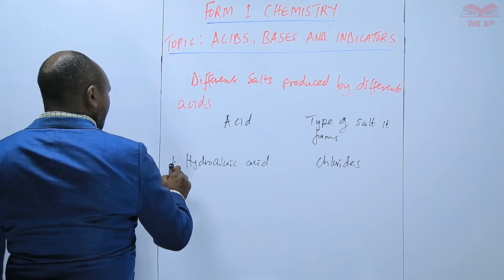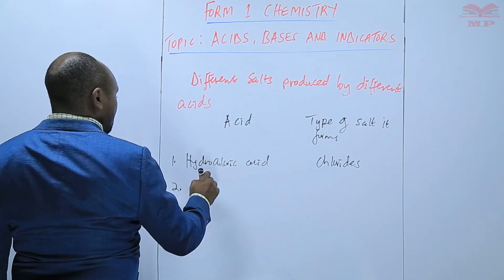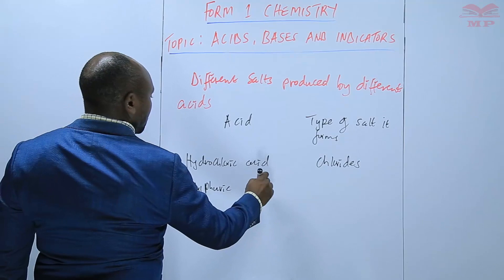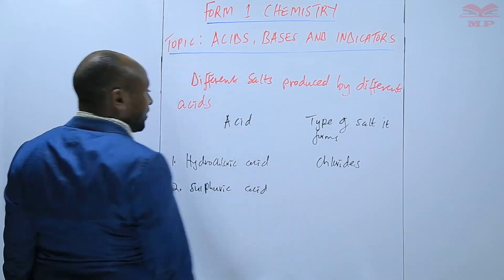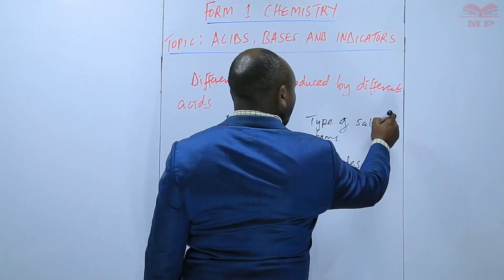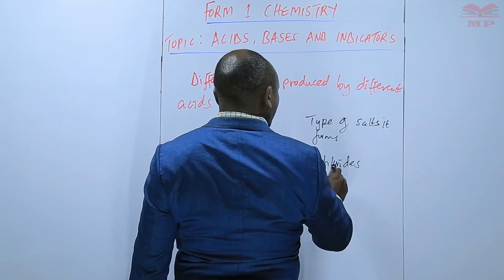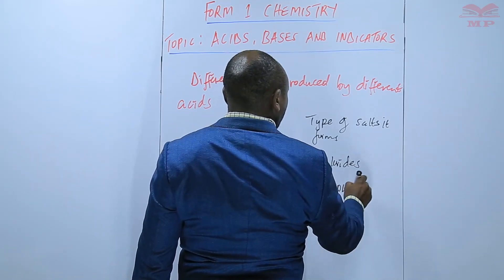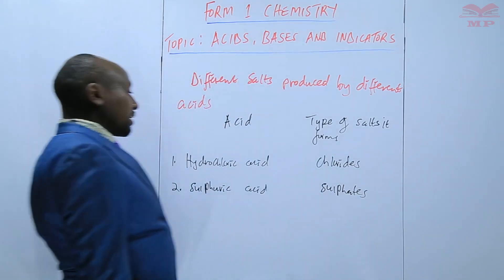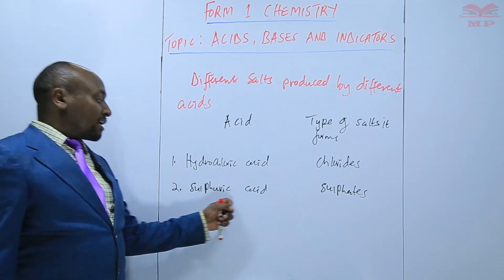If we take another acid such as sulfuric acid, the type of salts that we get are called sulfates. So calcium sulfate and magnesium sulfate are salts obtained from sulfuric acid.